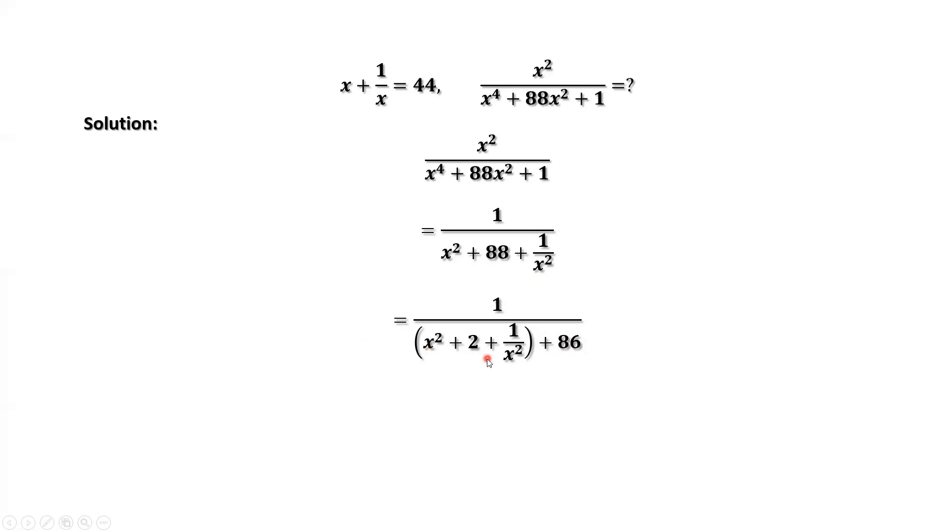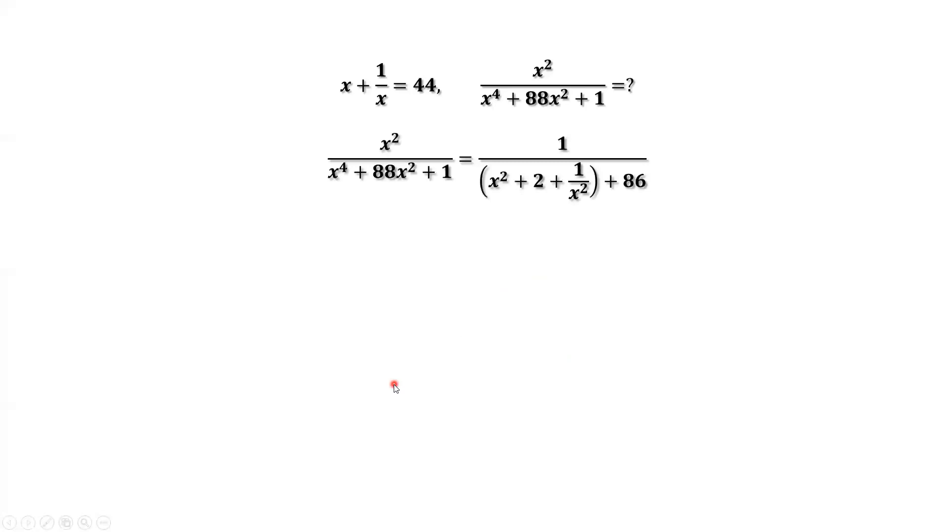What is the first part of the denominator? x squared plus 2 plus 1 over x squared? It is x plus 1 over x squared.